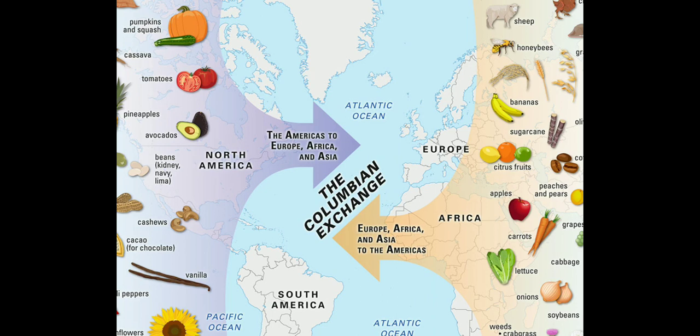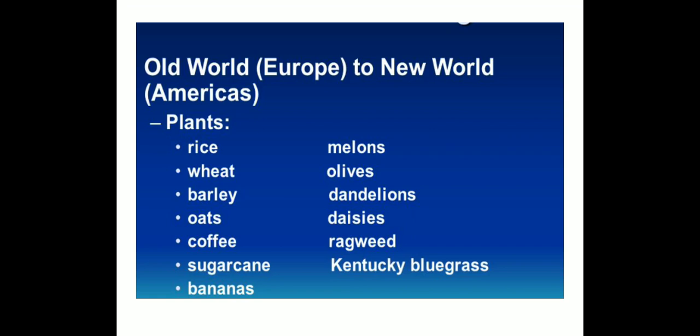Now let us see which crops, which animals, and which diseases were exchanged from new to old and old to new. From old world to new world, in terms of plants or crops: rice, wheat, barley, oats, coffee, sugarcane, bananas, melons, olives, dandelions, daisies, ragweed, and bluegrass. So these were actually domesticated in the old world but introduced to the new world.